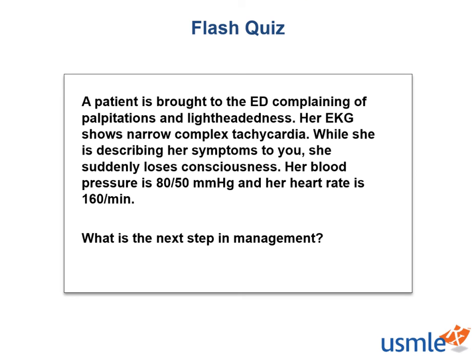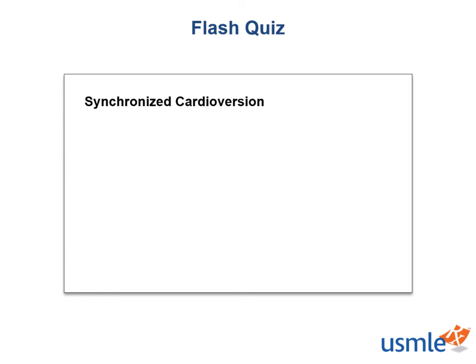Flash quiz: A patient is brought to the ED complaining of palpitations and lightheadedness. Her EKG shows narrow complex tachycardia. While describing her symptoms, she suddenly loses consciousness. Her blood pressure is 80/50 and heart rate is 160. What is the next step in management? The answer is synchronized cardioversion. If a patient is hemodynamically unstable — as shown by a systolic pressure in the 80s — you go right to synchronized cardioversion. Starting with vagal maneuvers, adenosine, or any other chemical cardioversion method would be inappropriate.